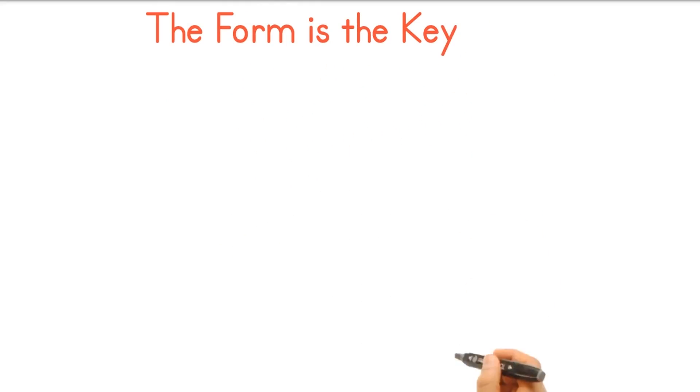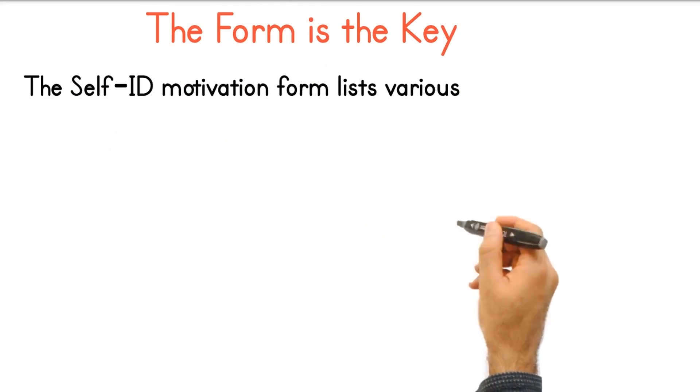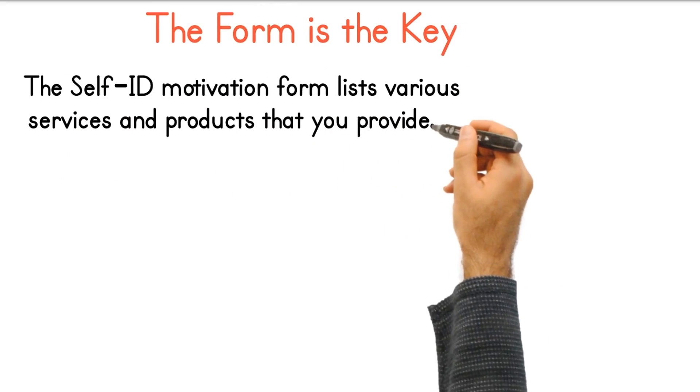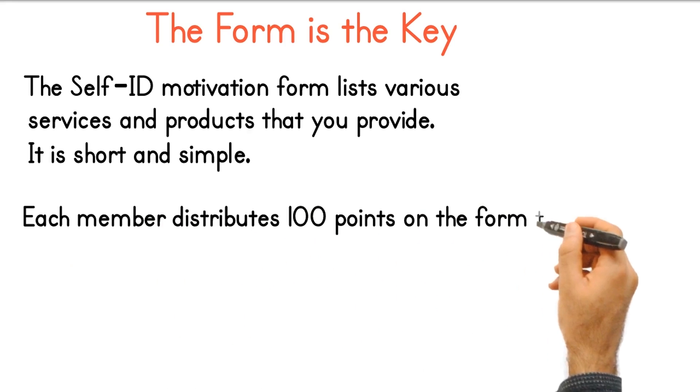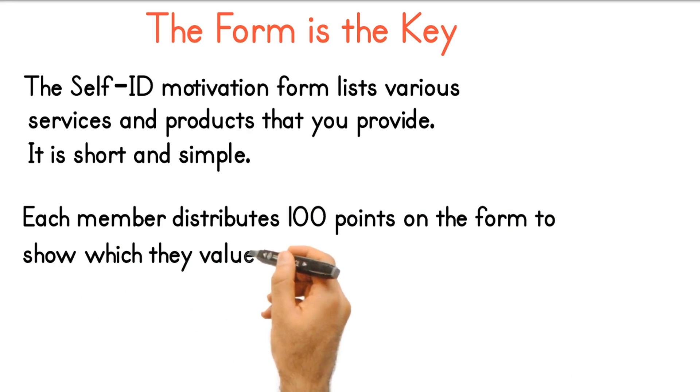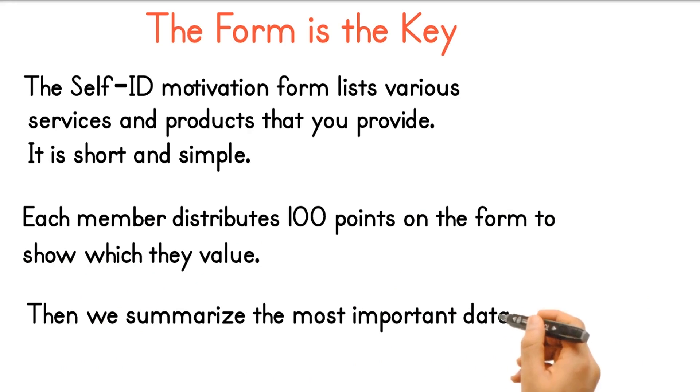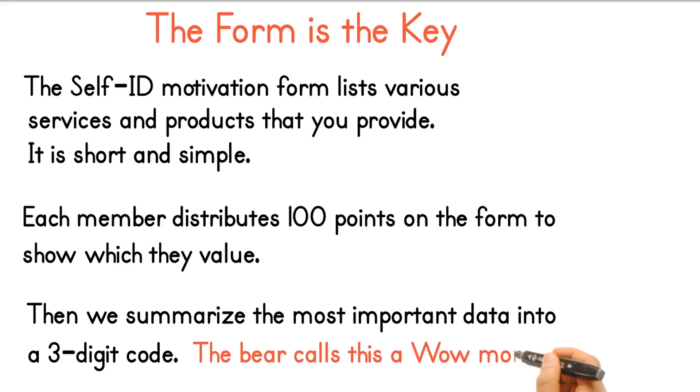The form is the key. The Self-ID motivation form lists various services and products that you provide. It is short and simple. Each member distributes 100 points on the form to show which they value. Then we summarize the most important data into a three-digit code. The bear calls this a wow moment.